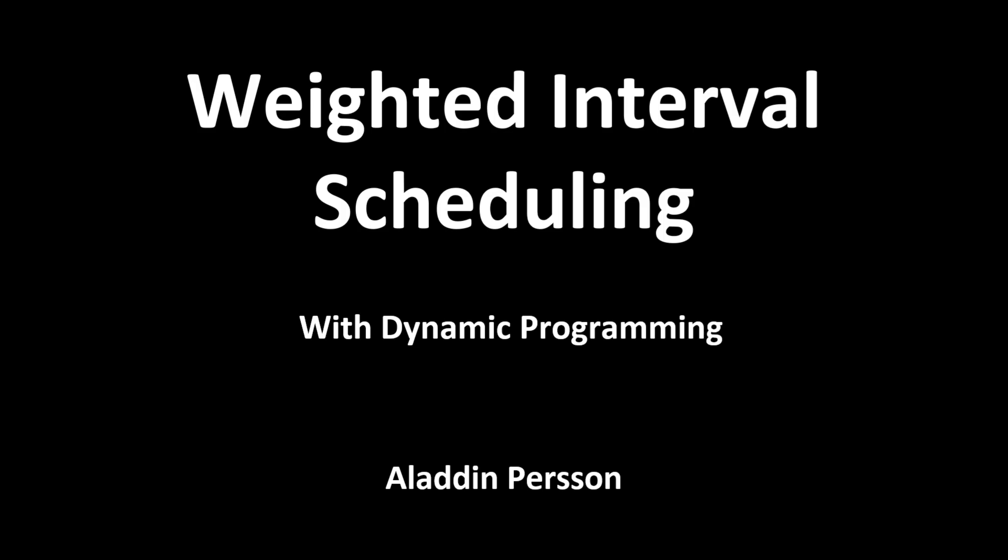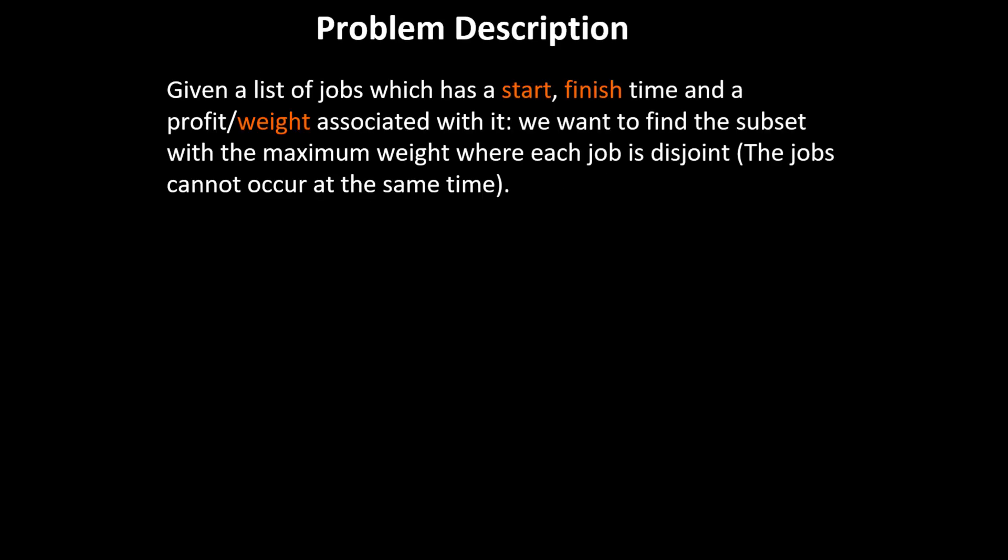Welcome. In this video I want to go through how to solve the weighted interval scheduling problem with a dynamic programming approach, and in the next video I will implement an algorithm in Python. The problem description is that we're given a list of jobs which all have a starting time, finish time, and a profit or weight associated with it. The goal is to find the subset of these jobs with the maximum total weight, where each job is disjoint — meaning the jobs cannot occur at the same time.